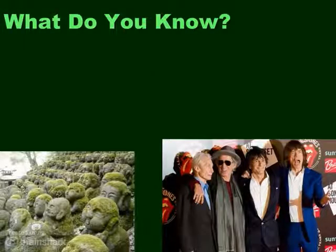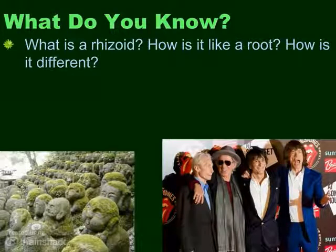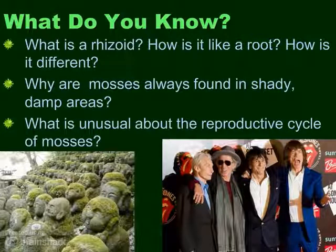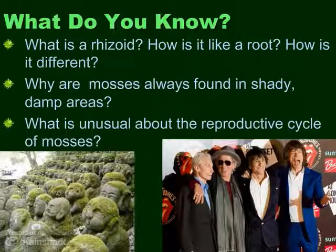While a rolling stone gathers no moss, let's take a look at what you should know from this section. First, you should be able to tell me about rhizoids — how it's like a root, how it's different, what's its function, where it's located. Secondly, you should be able to explain why mosses and other bryophytes are always found in shady, damp areas. And lastly, what's unusual about the reproductive cycle of mosses? We have the alternation of generations common in all plants, but what's unusual about mosses? Remember, come up with six questions — three level one, two level two, one level three — and your summary, and bring your notes to class.